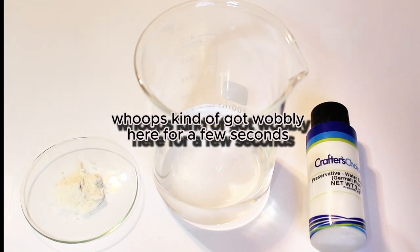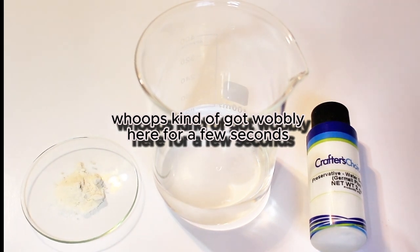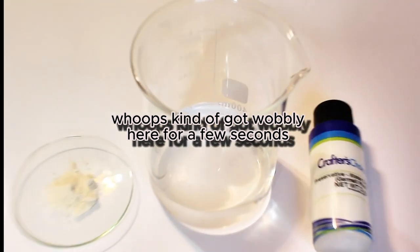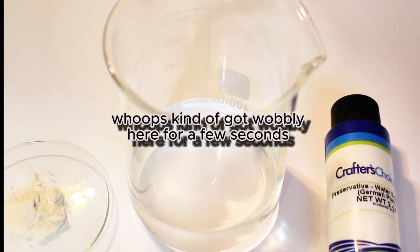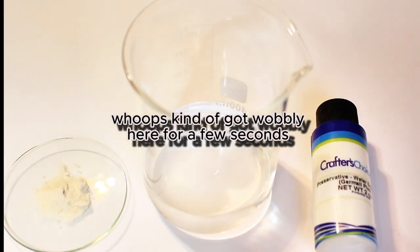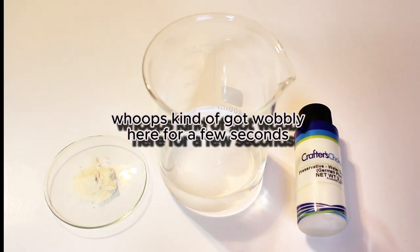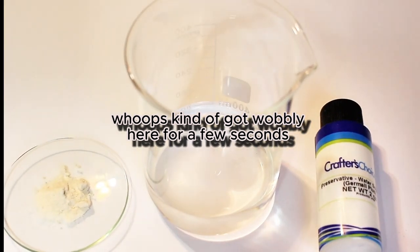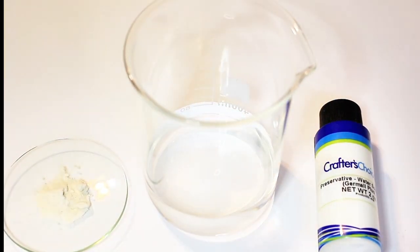In order to make the aloe vera liquid, we'll need 100 times aloe vera extract powder, distilled water, and liquid germol plus. Then we'll also need a container to mix the ingredients in, and then a jar with a lid to store it.